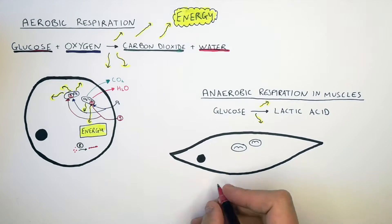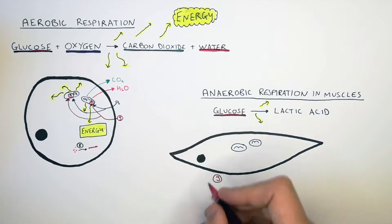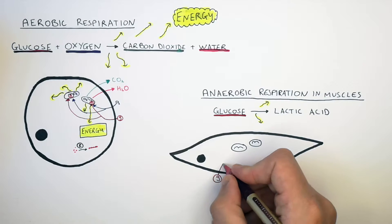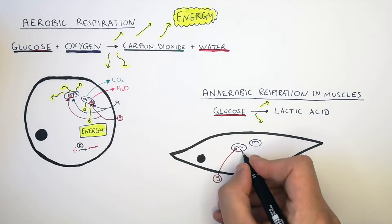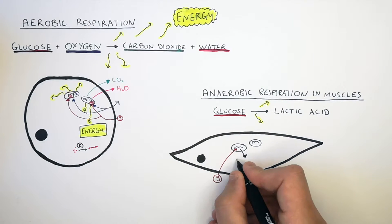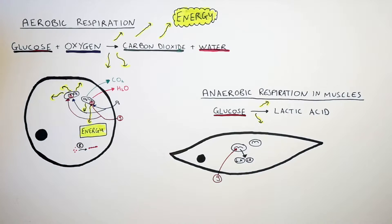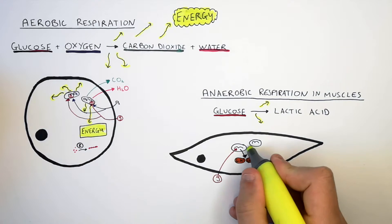So the glucose is going to enter the cell. It is then going to be used by the mitochondria and it will undergo incomplete combustion. The product of incomplete combustion, as you can see here, is lactic acid. Lactic acid is then released back into the muscle cell along with the release of energy.